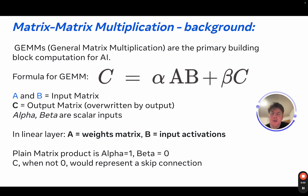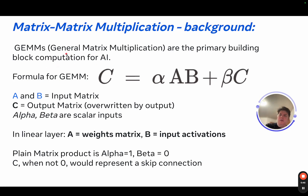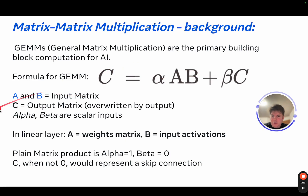So to start, matrix multiplication background. GEMMs, otherwise broken down into general matrix multiplication, are the primary building block computation for AI. Obviously we've got nonlinear activations, but the arithmetic intensity is not as high as the matrix multiplies. The formula for a GEMM is given by C, or the output matrix, equals alpha times AB plus beta times C. A and B are input matrices, C is our output matrix which is overwritten as we compute the output, and alpha and beta are scalar inputs.